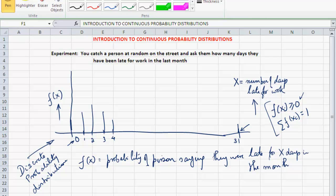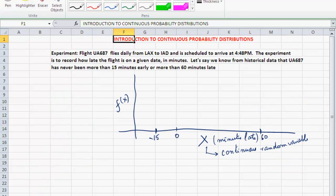Now let's look at what is a continuous probability distribution. I have a different experiment here now. Flight United 687 flies daily from Los Angeles to Washington Dulles. It's a daily flight and it's scheduled to arrive at 4:48 pm every day. The experiment is to record how late the flight is on a given date. So I give you a date and I say, tell me how late the flight is in minutes. And just to keep things simple, let's say we know from historical data that UA 687 has never been more than 15 minutes early or more than 60 minutes late.